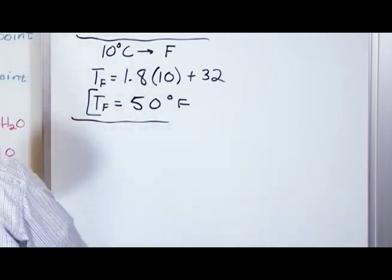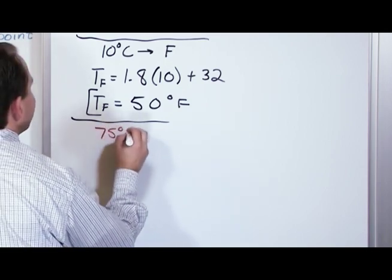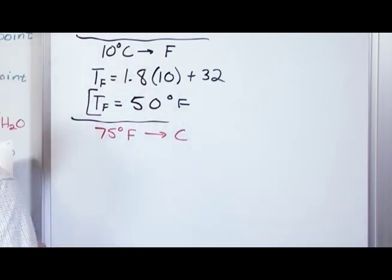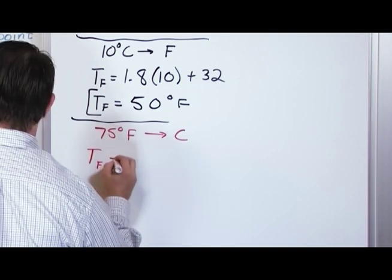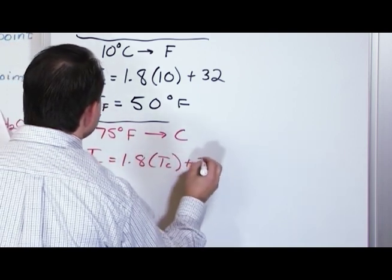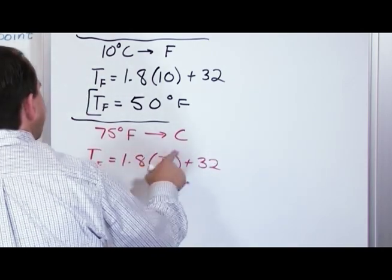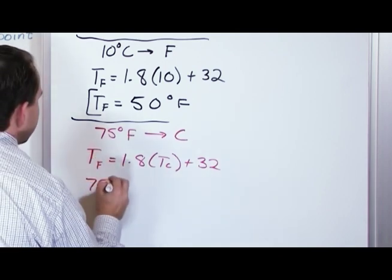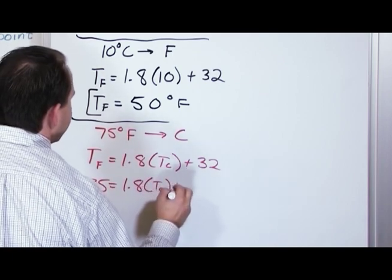We'll do one more really quickly. Let's say we're going to go the other direction. Let's say we're going to take 75 degrees Fahrenheit, and we want to know what that is in Celsius. Well, you use exactly the same equation. Temperature in Fahrenheit is equal to 1.8 times temperature in Celsius plus 32. The only difference here is we don't know what this is, but we do know what the temperature in Fahrenheit is. So we just put it there. 75 is equal to 1.8 times TC plus 32.